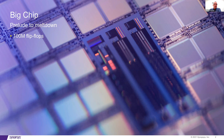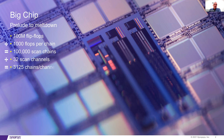Let's look at the die level first — a single die, monolithic design with 100 million flip-flops. I would qualify that as a large design, not huge, but large. With scan chains of 1,000 flip-flops per chain, that gives you 100,000 scan chains. With 32 scan channels on your device, that leaves you with 3,125 scan chains per channel, which is pretty high. Adding compression in the neighborhood of 200X — pretty aggressive, but achievable — gives you maybe 16 blocks to run.